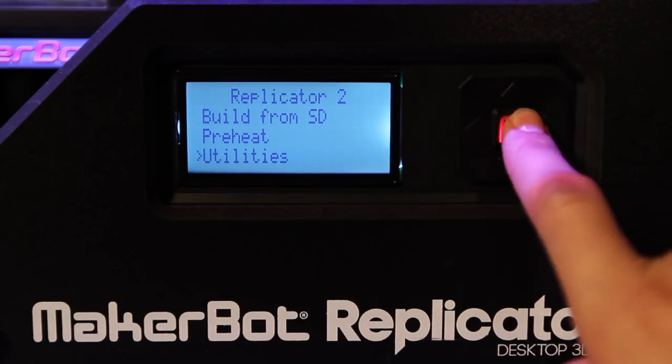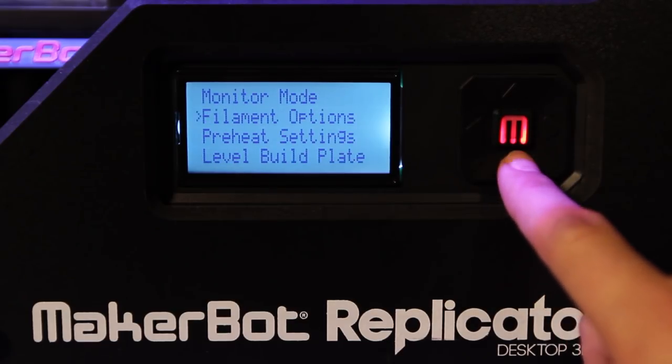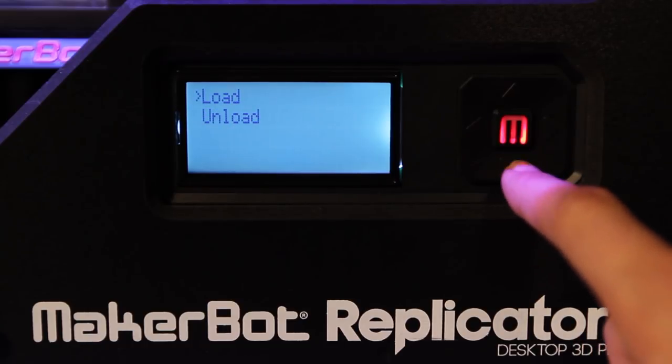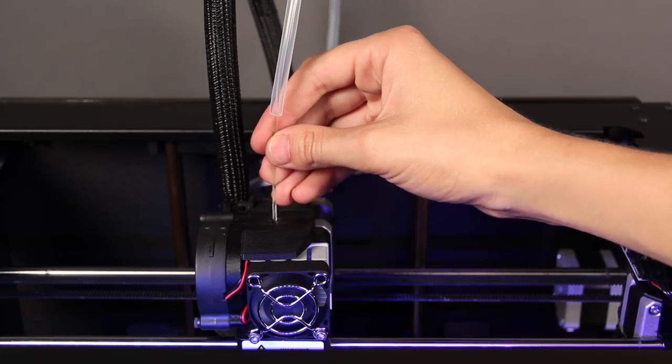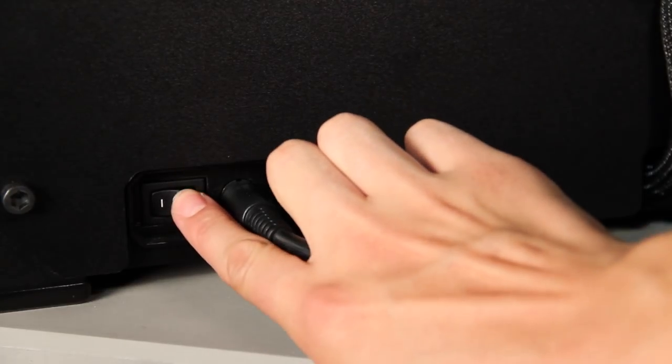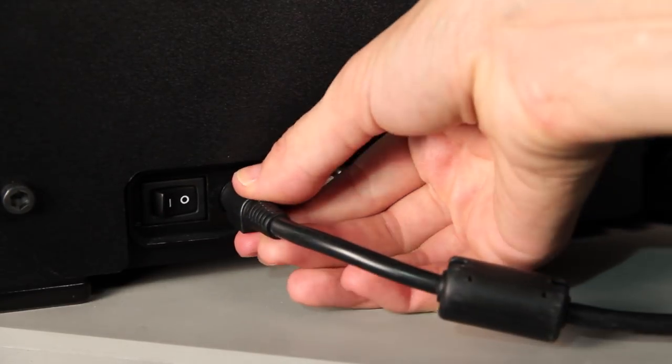But before you begin, make sure you unload the filament from your extruder. You can do this by going to Utilities on the main menu and selecting Filament Options and then Unload. Once you've removed the filament, turn off your machine and wait a few minutes for your extruder to cool down.